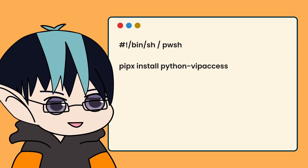After you install PipX, stay in your terminal and run another command: "pipx install python-vip-access". That's it. Now you can launch python-vip-access from your terminal. Unfortunately, terminal is the only way to access it, but if all goes well, you should only need to touch this once every two years.